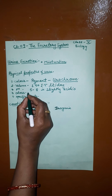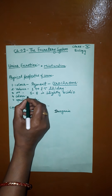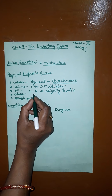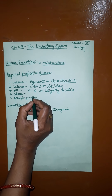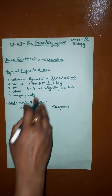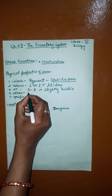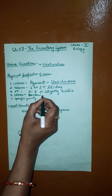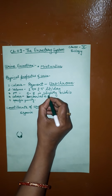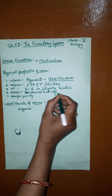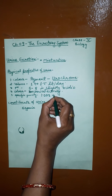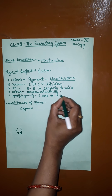The odor of urine is pungent, ammonia-like. Why ammonia-like? Due to bacterial activity — bacterial activity causes the smell to become strong and ammonia-like. The specific gravity of urine is 1.0032 to 1.035.